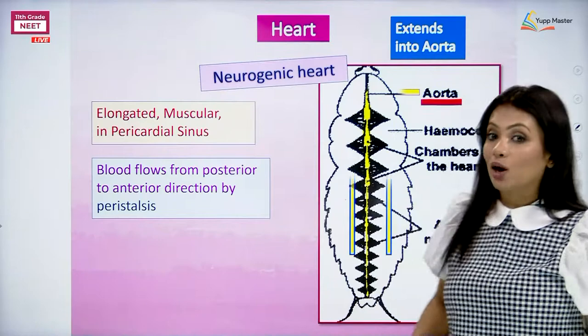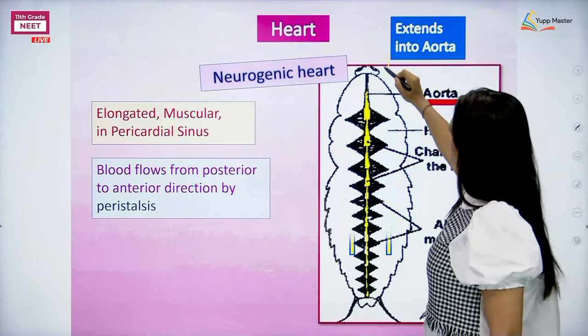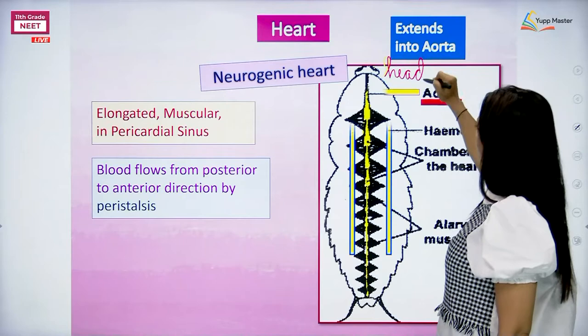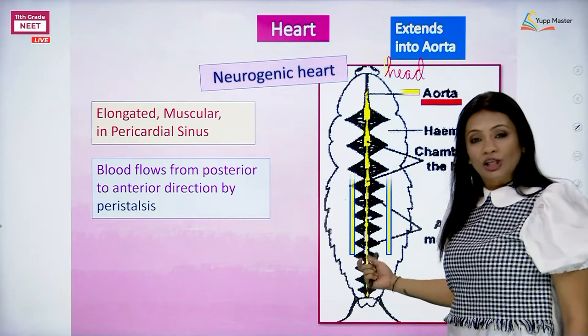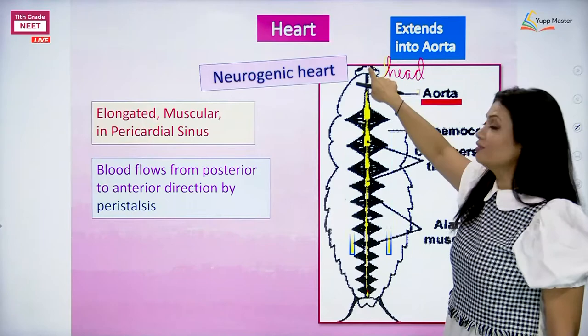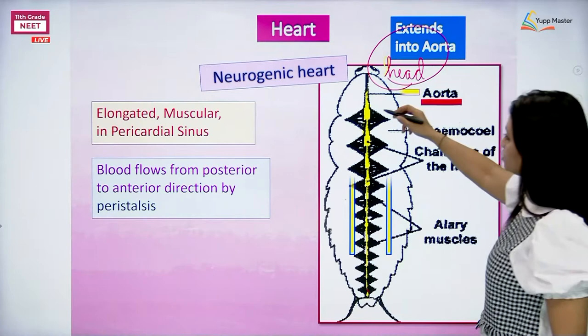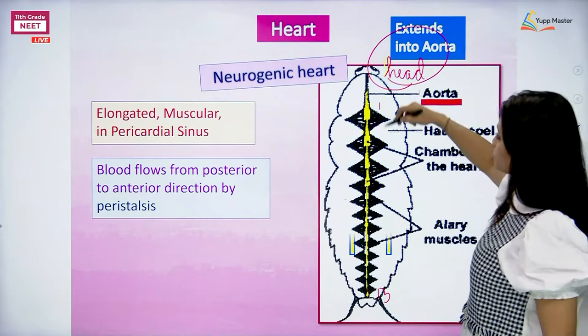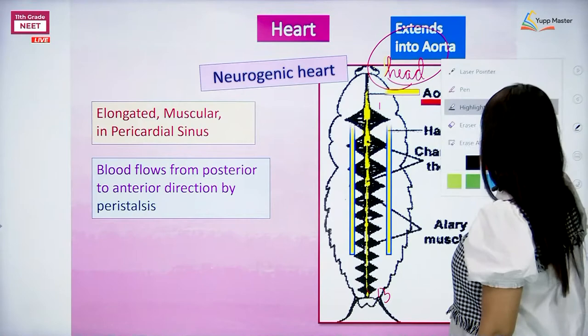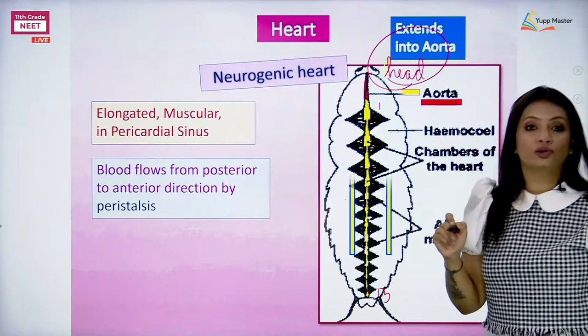The aorta opens at the level of the head of the cockroach. Blood right from the last chamber with the help of peristaltic movements goes and first all of that blood enters into the head of the cockroach, then it is circulated throughout the whole body. The first chamber opens into this tube called the aorta, which opens at the level of the head.